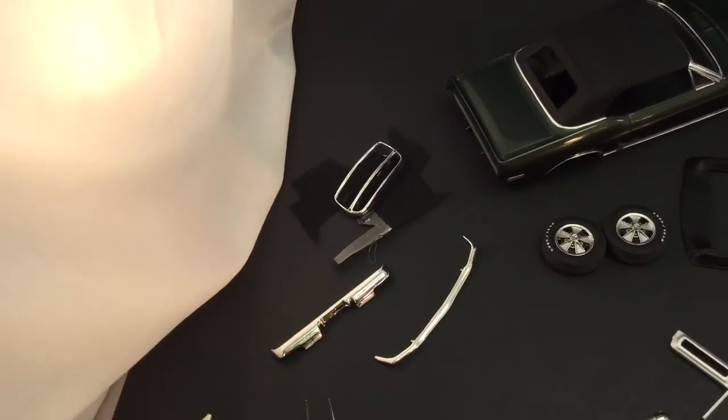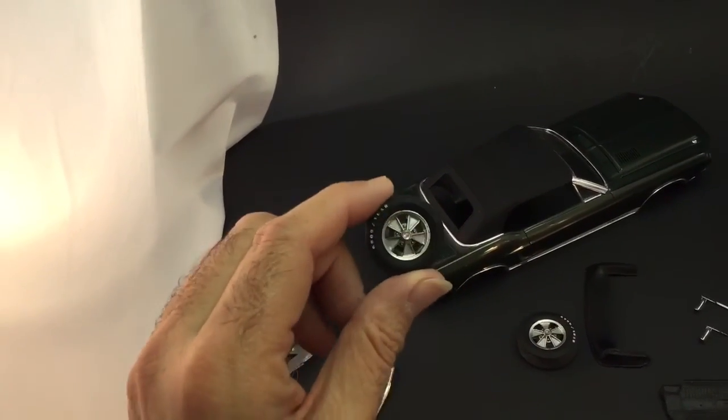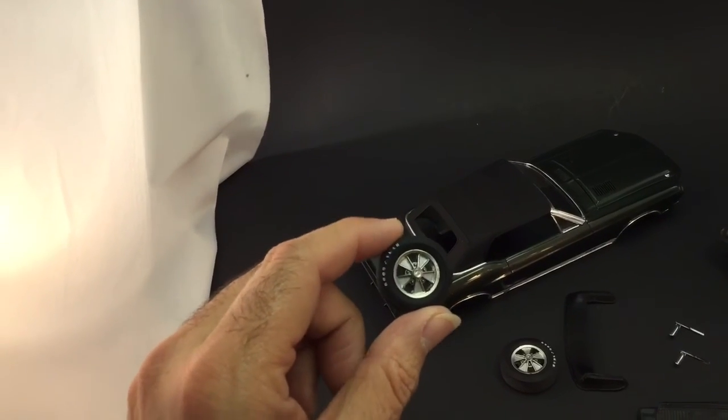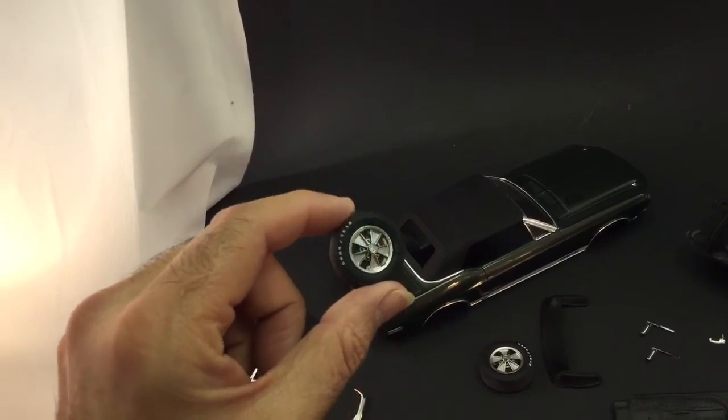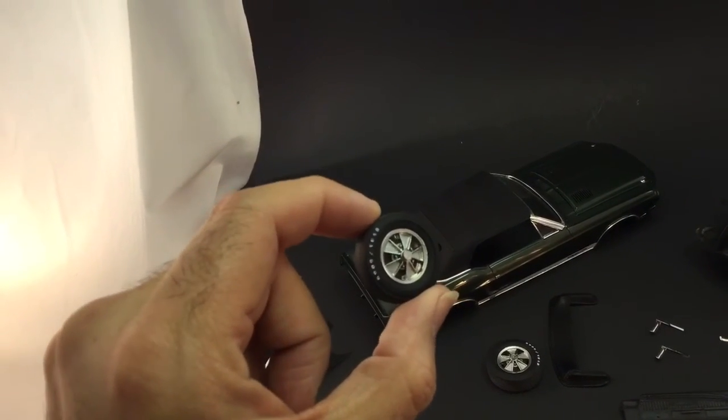These are the beautiful hubcaps. I Alclad'd them and then put silver on the V's on there to make them look a little bit more realistic. I also painted the actual letters on the tires.